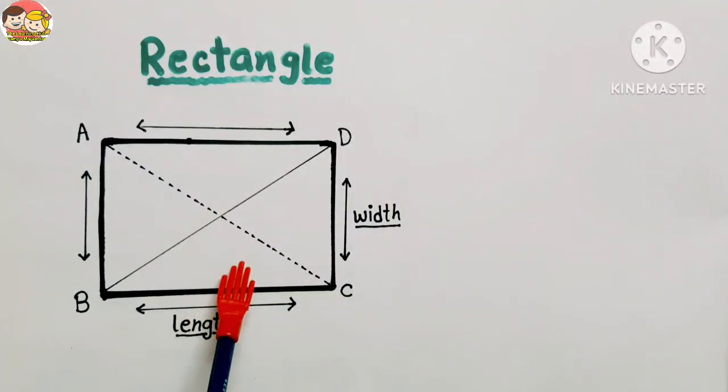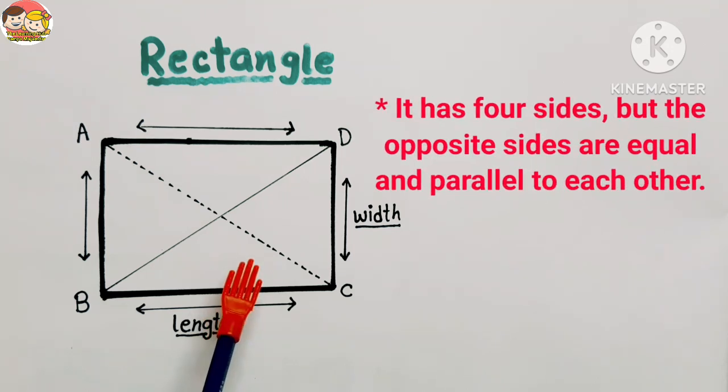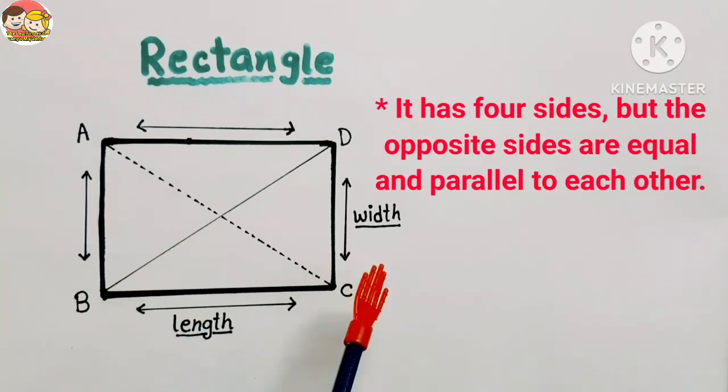The next figure represents a rectangle. So this is a rectangle shape. It has four sides.